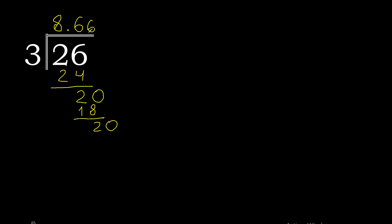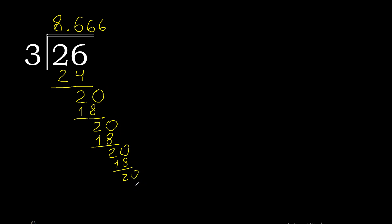3 multiplied by 6 is 18, subtract, complete with 0. 3 multiplied by 6 again — this pattern repeats. Therefore 6 repeats. So 26 divided by 3 equals 8.6̄ (8 point 6 repeating).